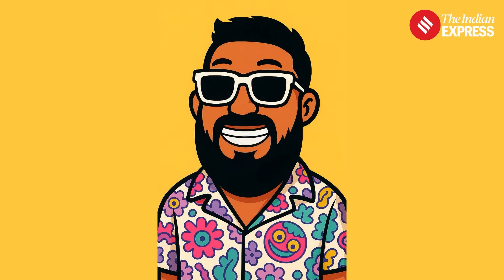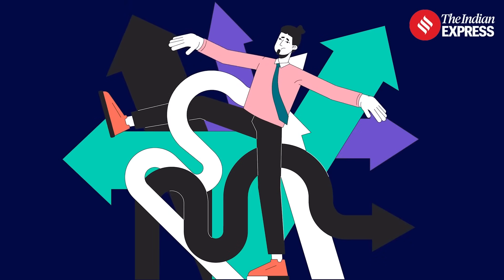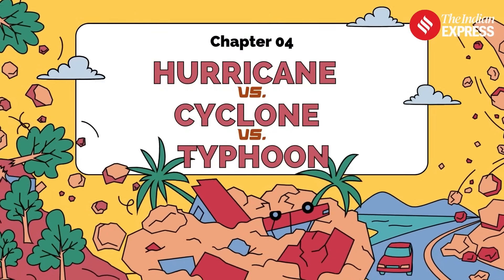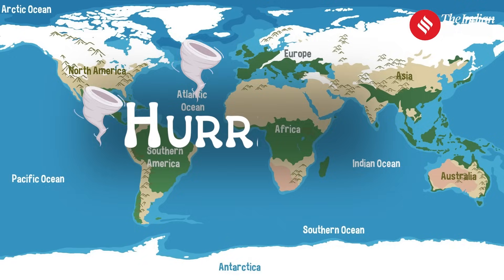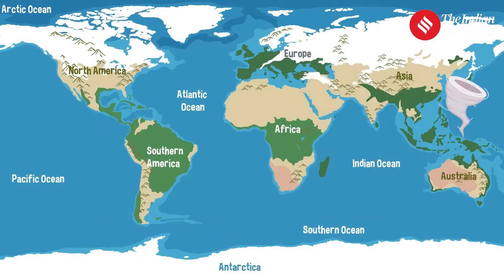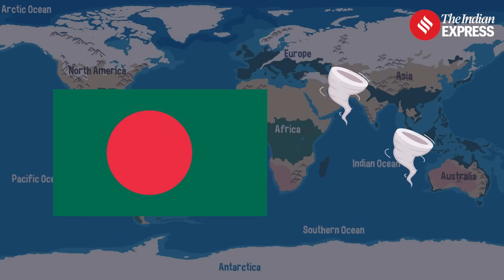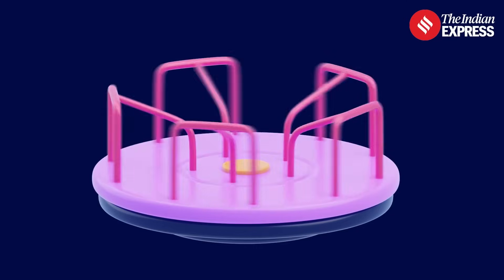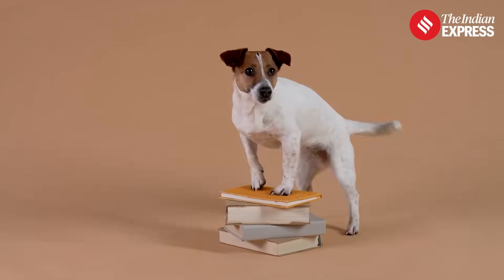Now you know quite a bit about storms, their categories and how they are named. So let me decode the biggest confusion: what's the difference between hurricane, cyclone and typhoon? Same beast, different names. In the Atlantic Ocean and Eastern Pacific, it's called a hurricane. In the Western Pacific — around Japan, the Philippines and China — it's a typhoon. Near India, Bangladesh, Sri Lanka or Australia, it's known as a cyclone. They all spin, they all destroy. But a quick fact: cyclones rotate in a different direction to hurricanes and typhoons because they form in the southern hemisphere.